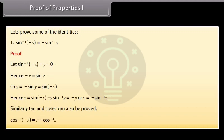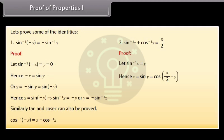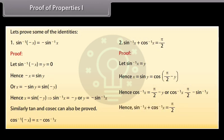Proof that cos⁻¹(-x) = π - cos⁻¹ x. Second, proof that sin⁻¹ x + cos⁻¹ x = π/2: Let sin⁻¹ x = y. Hence x = sin y = cos(π/2 - y). Hence cos⁻¹ x = π/2 - y, or cos⁻¹ x = π/2 - sin⁻¹ x. Therefore sin⁻¹ x + cos⁻¹ x = π/2. Similarly, the other two parts can also be proved.